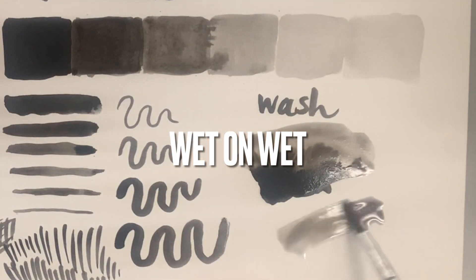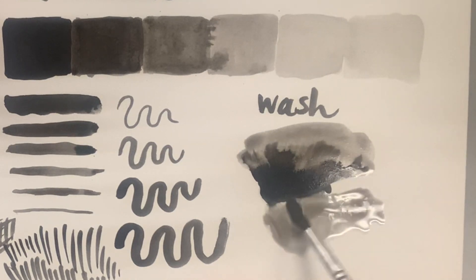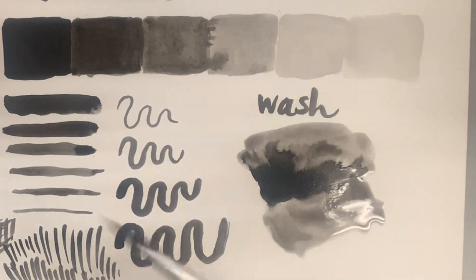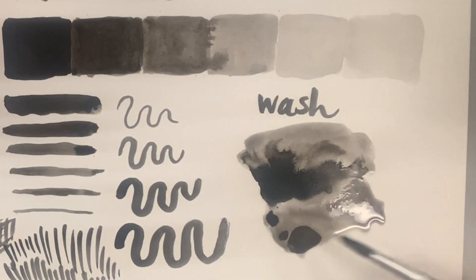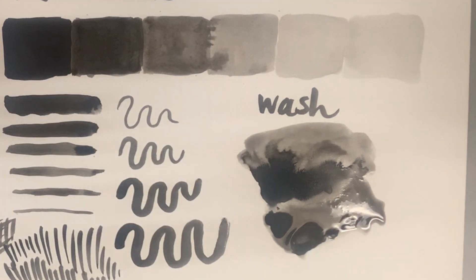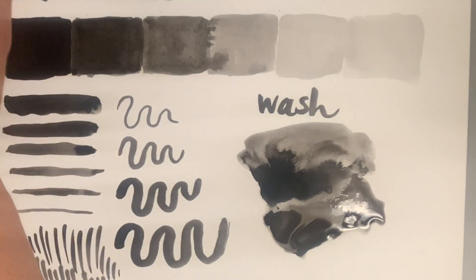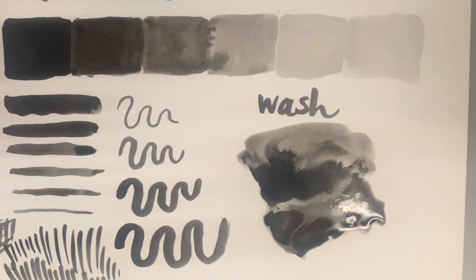You can see that really nice wet-on-wet bleed of ink that just creates really unpredictable, beautiful areas of light, beautiful areas of dark - just really fun to kind of wash. So washes are really when you're doing large areas, washes are really important.